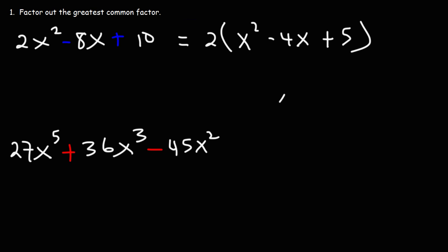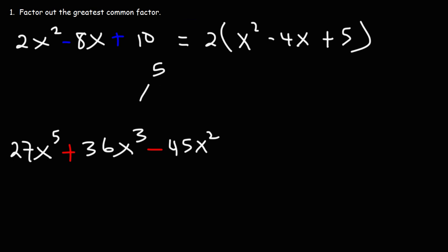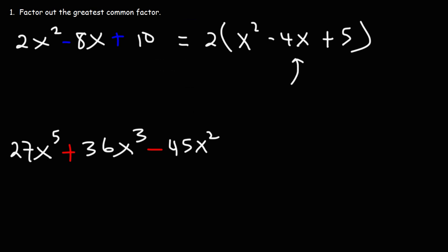So we have a trinomial — a polynomial with three terms. Now, it doesn't look like we can factor this trinomial further, so we're going to leave it the way it is. In order to factor it, we'd need two numbers that multiply to 5 but add to negative 4. That's not possible: negative 1 and negative 5 multiply to 5 but add to negative 6, and positive 1 and positive 5 add to positive 6. So we can't factor this trinomial, and we leave the answer as is.